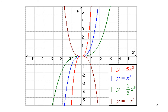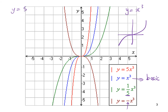Here are a few types of cubic functions. For y = 5x³ (the red one), the coefficient is 5. The basic cubic function has coefficient 1, and we also have coefficient one-fifth and coefficient negative one. In these cases, we just want to know the shape, not the exact accuracy of the graph. Whether you have y = x³ or y = 5x³, the shape is essentially the same.